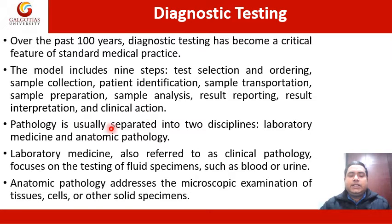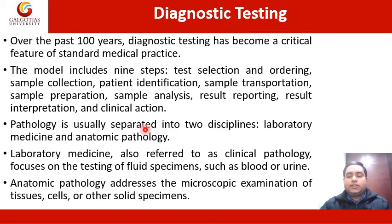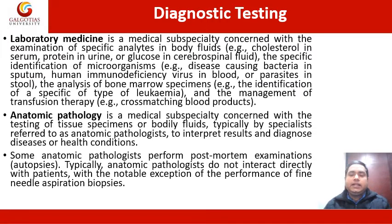Pathology is usually separated into two disciplines: laboratory medicine and anatomic pathology. Laboratory medicine, also referred to as clinical pathology, focuses on the testing of fluid specimens such as blood or urine for the diagnosis of any disorder. Anatomical pathology addresses the microscopic examination of tissue cells or other solid specimens. We will investigate both laboratory medicine and anatomic pathology in detail.